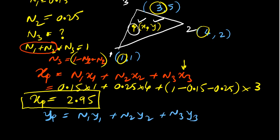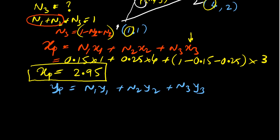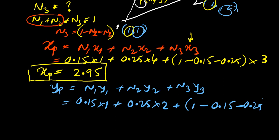Okay. Same method. What is the value of N1? N1 is 0.15 and y1 is 1. Plus N2 value is 0.25 and y2 is 2. Plus N3 is 1 minus N1, N1 is again 0.15 minus N2 is 0.25 into y3. What is the value of y3? That is 5.